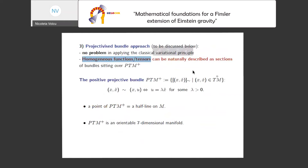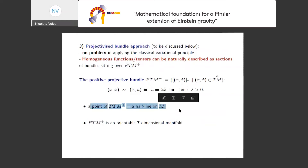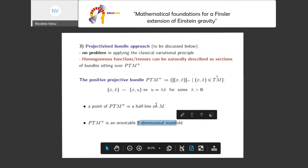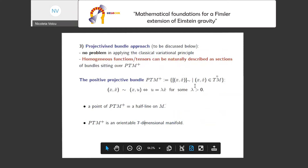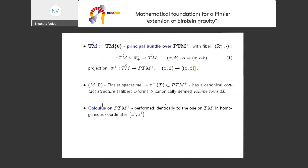Moreover, homogeneous functions or tensors can be naturally described as sections of bundles sitting over the oriented projective tangent bundle PTM+. This is constructed by identifying a half-line as a single point — it's a set of directed lines. A point on PTM+ is a half-line on M, giving a seven-dimensional manifold. Since M is four-dimensional, TM is eight-dimensional, and factorizing one dimension away leaves a seven-dimensional manifold. If we projectivize with only positive factors, the result is orientable provided M itself is orientable, so we can integrate with no worries on compact domains in PTM+.